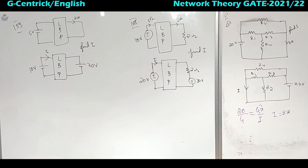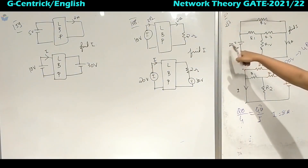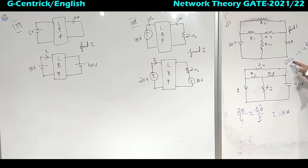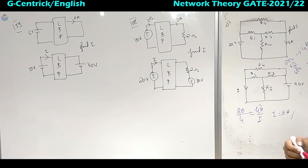Second method: for 20 volts it is giving 4 amperes. To get 40 volts, multiply by 2. Similarly, when I multiply the excitation by 2, I must multiply the response by 2 as well, giving 8 amperes. Both methods give the same answer. Next we will come to question 158.